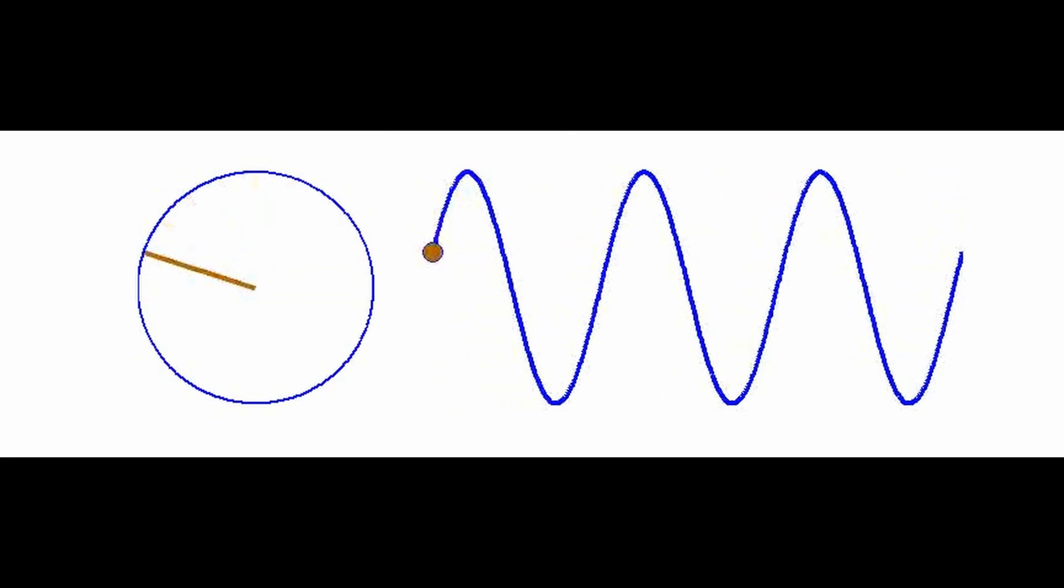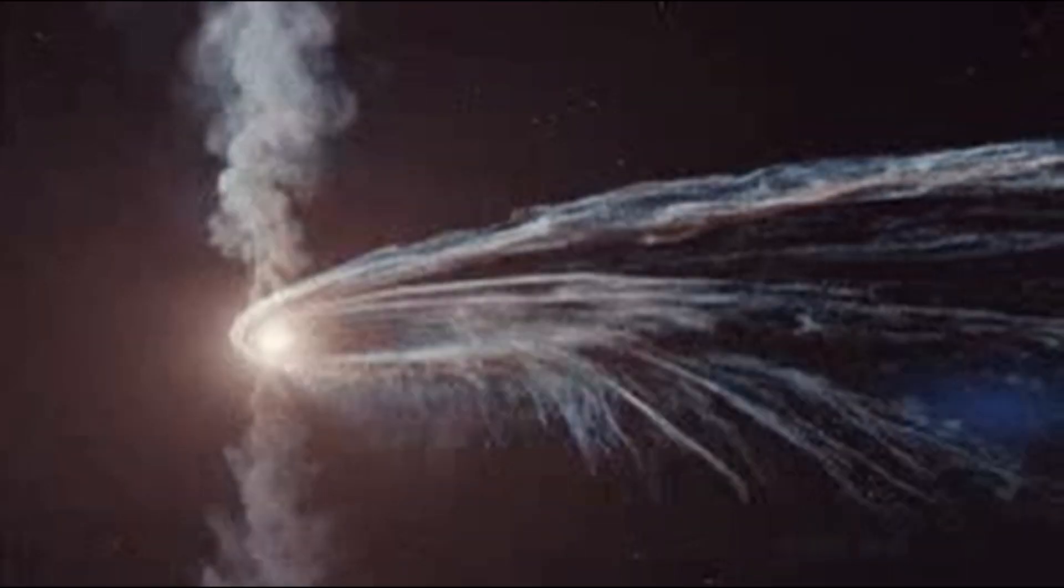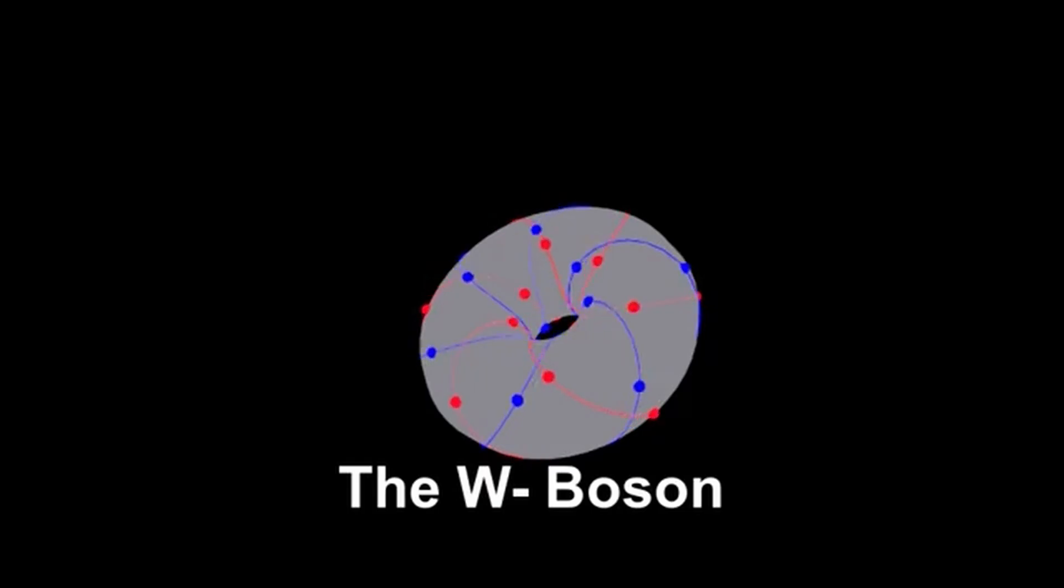Various theorems relate this difference to other properties of the system. For example, in the context of graph theory, the spectral gap is related to the Cheeger constant, which characterizes the connectivity of a graph.